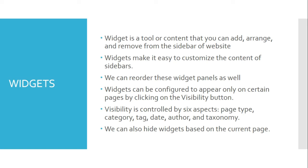For example, if you don't want the archives widget to appear on search results pages, choose hide and page is search results. Each visibility rule is handled separately. There is not a way, for example, to only display a widget on posts that are categorized as summer and also tagged with picnic.